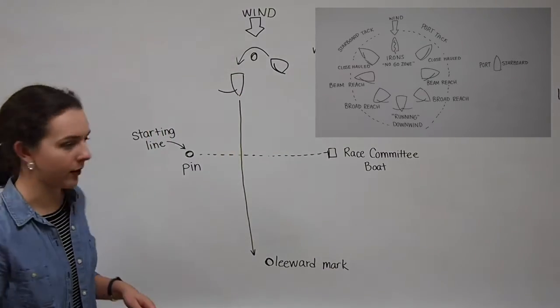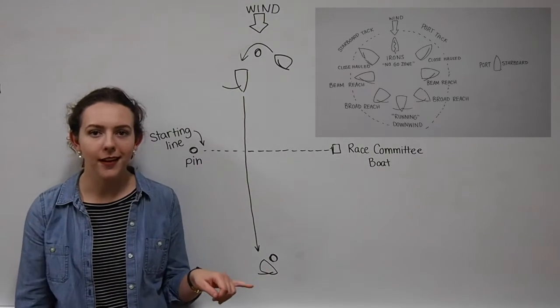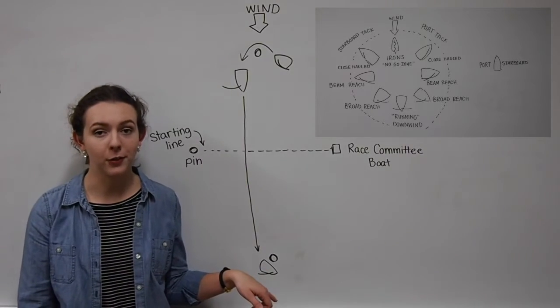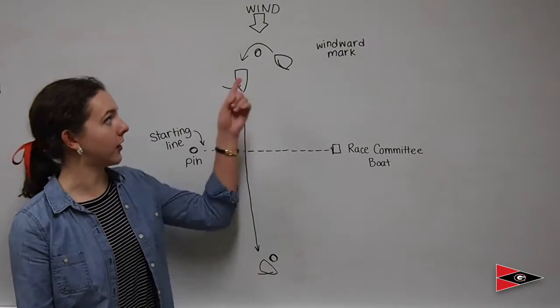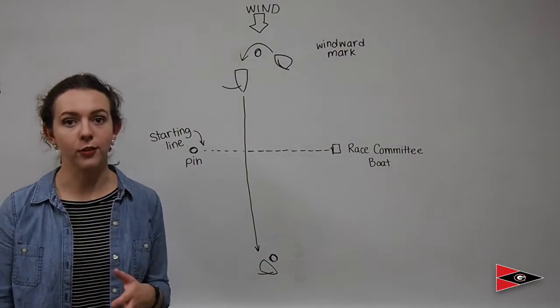So let's bring our boat down here. After sailing your downwind leg, the competitors will transition back to another upwind leg. In the process, they will leave the leeward mark to the port side of the boat, just like the windward mark when they transition to their downwind leg.